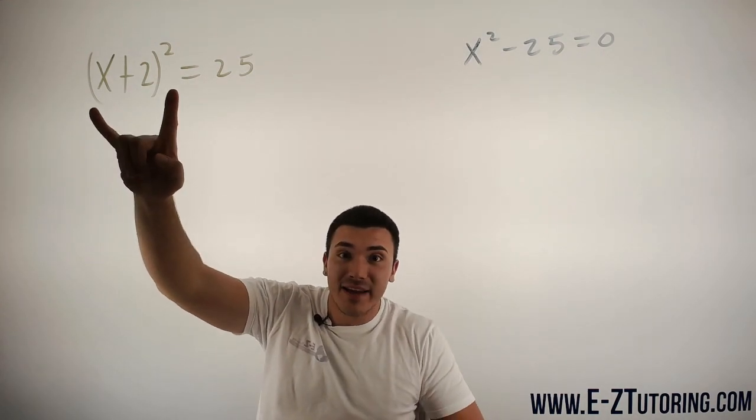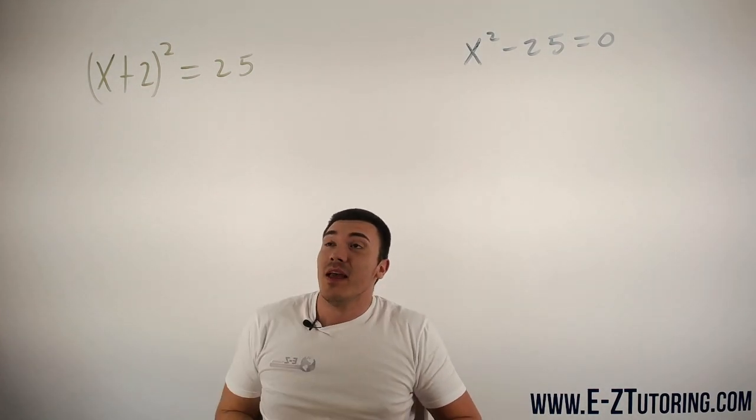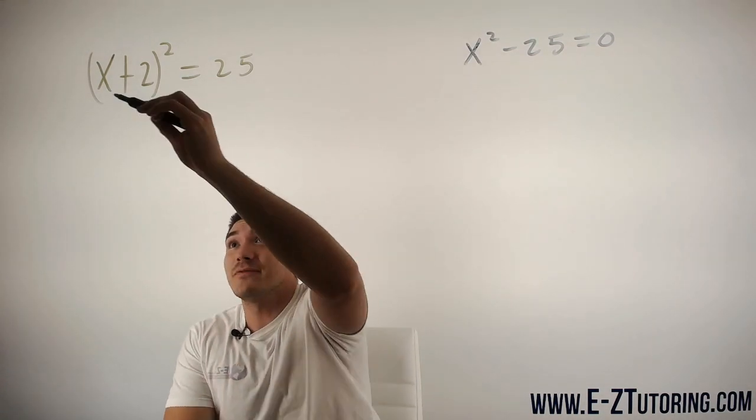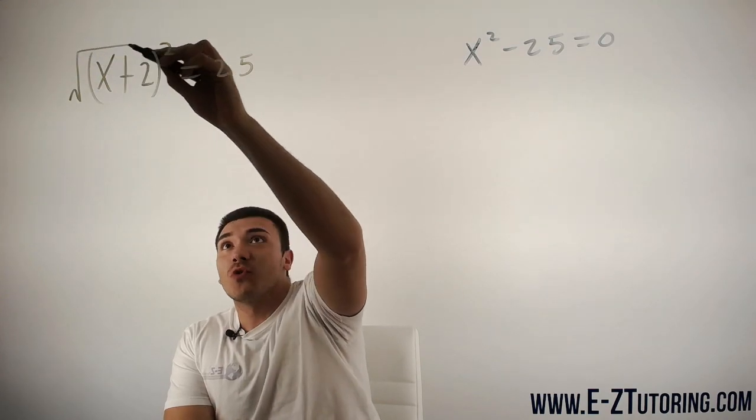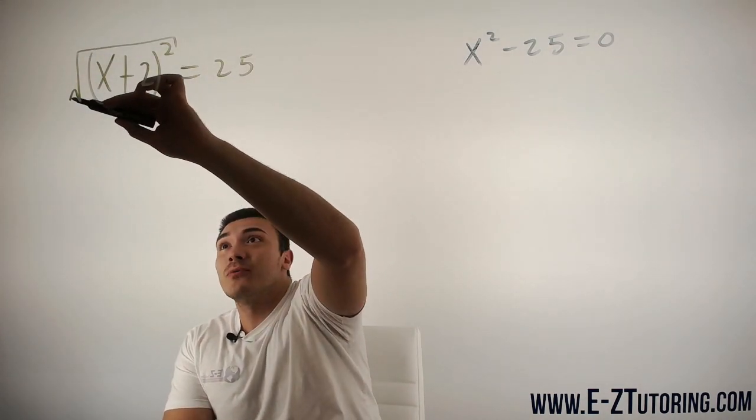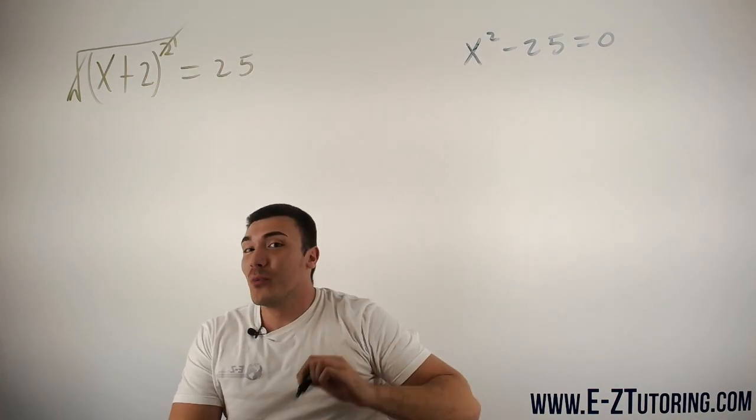Once that's done, in this case it's done, what you can do is you can square root both sides. The reason for that is because when you square root a square, the square root and the square will cancel.